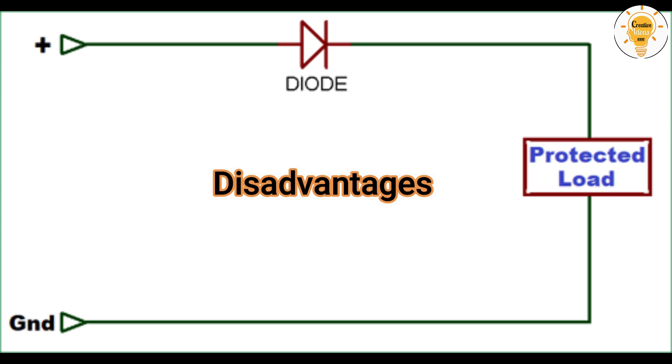Disadvantages: The voltage drop across the diode is dissipated as heat. This means that the more current, the greater the dissipation.